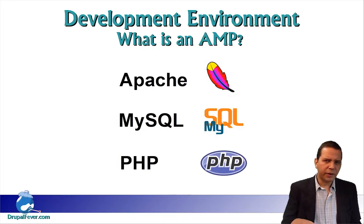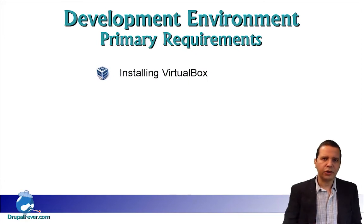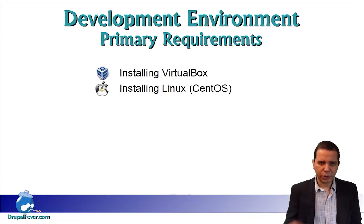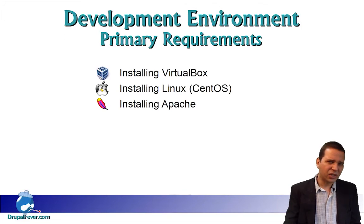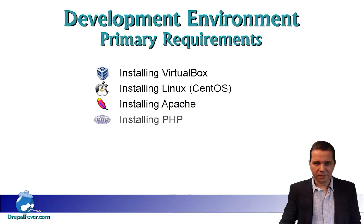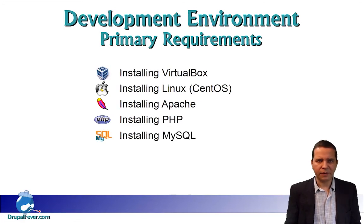In order to set up an AMP on our local computer, we will go through five steps. One, install a virtual PC. Two, install Linux inside this virtual PC. Three, install the Apache web server on Linux. Four, enable the PHP extensions on Apache. And five, install a MySQL database server.